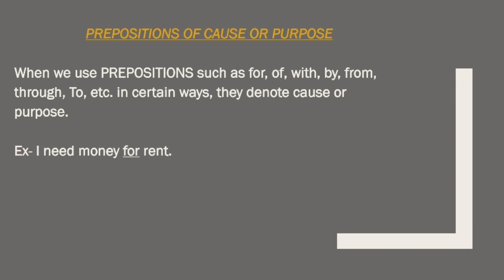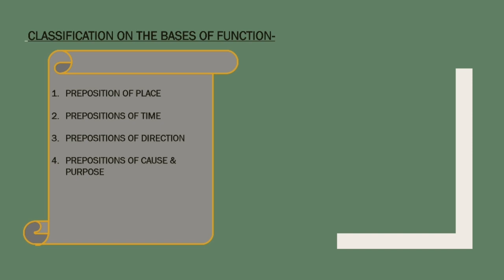Finally, prepositions of cause or purpose. When we use prepositions such as for, of, with, by, from, through, to in certain ways, they denote cause or purpose — why something happened. For example, 'I need money for rent.' Here 'for' is showing the cause — the reason he needs money is to pay rent. So 'for' is a preposition of cause or purpose.